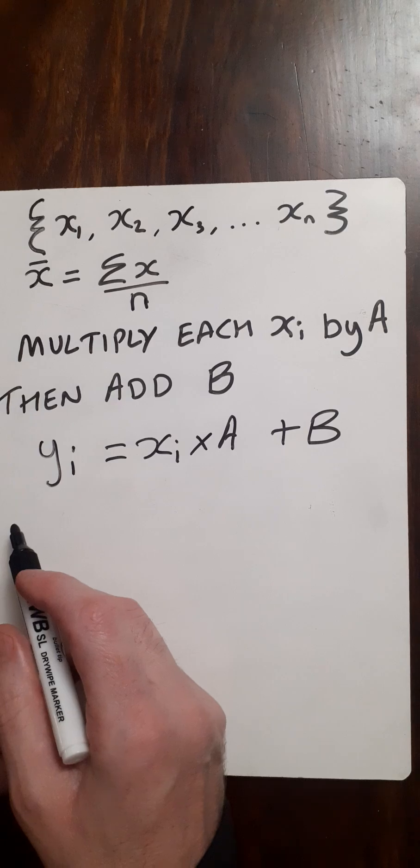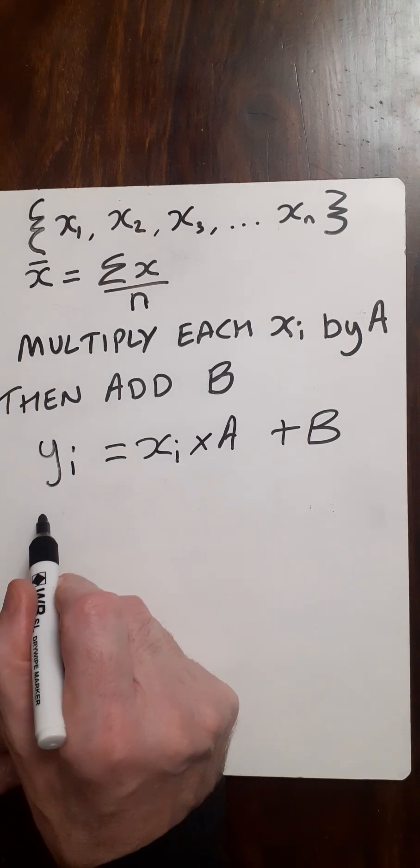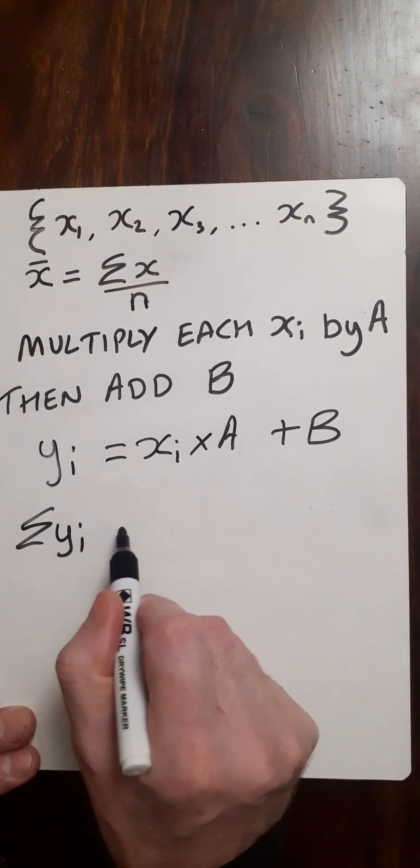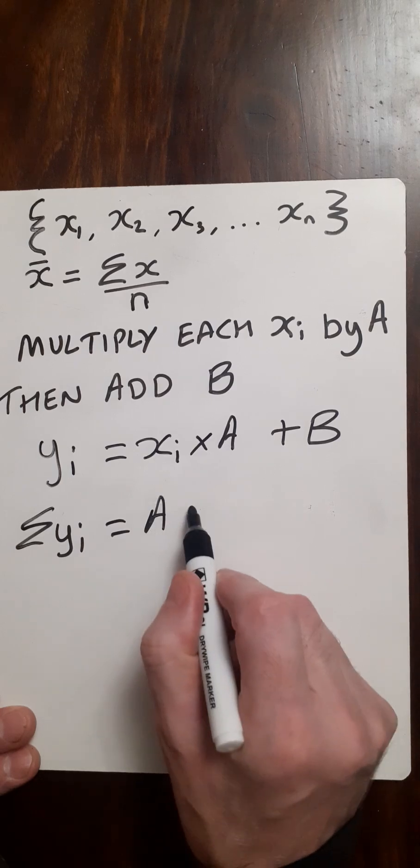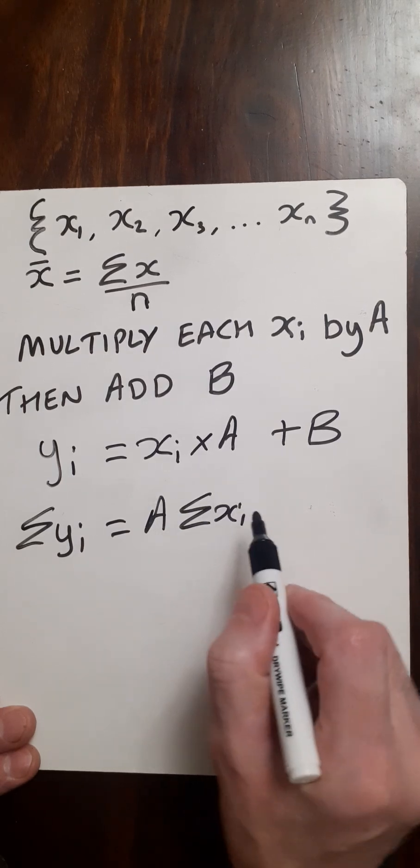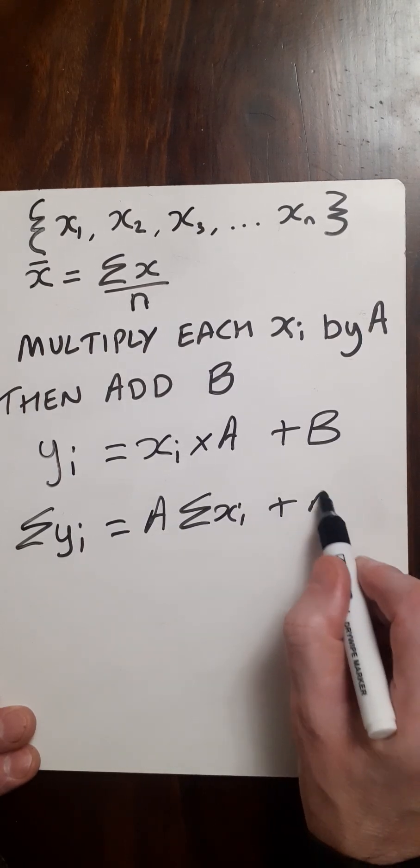Now to find the mean we need to sum all the xis and all the yis. So sum of the yis equals, bring the A to the front and then the sum of the xis plus N times B.